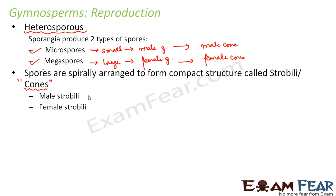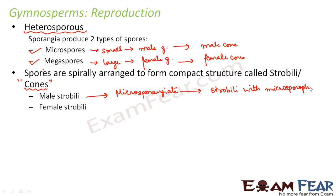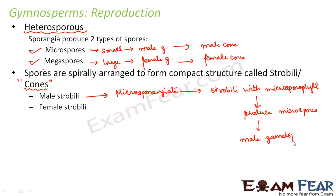The male strobili contains microsporangia with microsporophylls, which then produce the microspores. These microspores develop into the male gametophyte, and this male gametophyte will then produce the male gametes, also referred to as sperm. This is how the male gametes are produced.